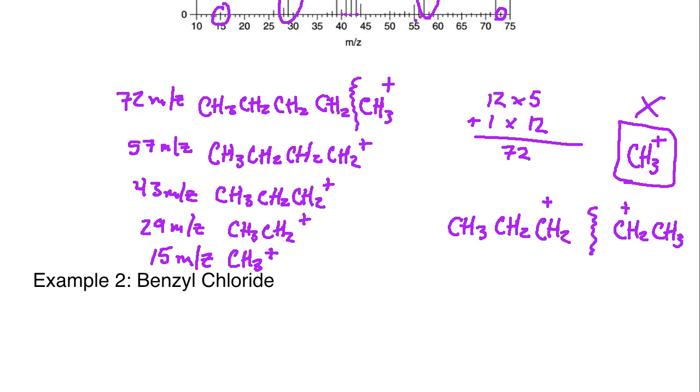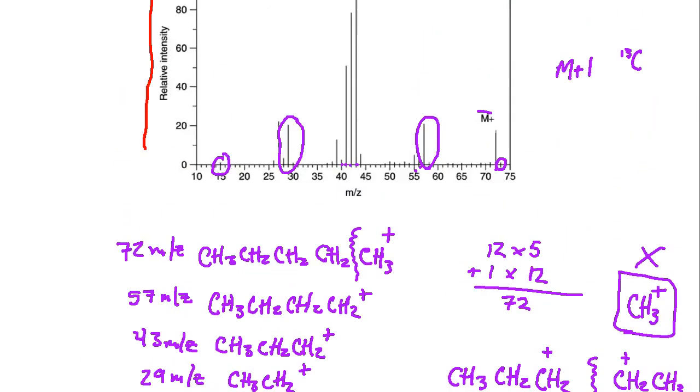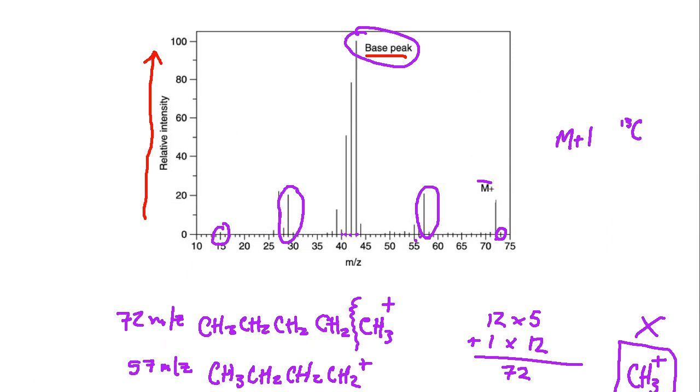The reason that we are trying to avoid this is that methyl carbocations are not stable. These do not have any hyperconjugation; they do not have any ability for rearrangement. So if you're going to be in a case that is going to start generating methyls, it tends not to be a favored site, and so this most likely leads to the base peak being the propyl group right there.